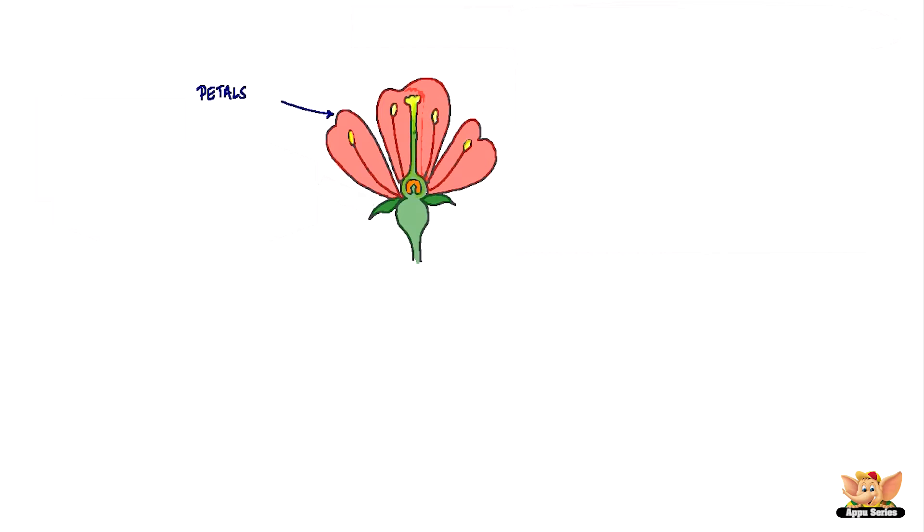But before the flower blossoms, the petals are tightly closed. This is when it's called a bud. The bud sits on small leaf-like structures attached to the stem called the sepals.